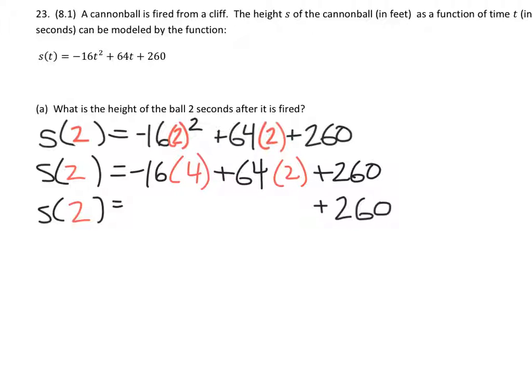Notice I've written 260 here because it's addition, which is the next step in the process for order of operations. So as you can see right here, we have negative 16 times 4 is negative 64, 64 times 2 is 128,